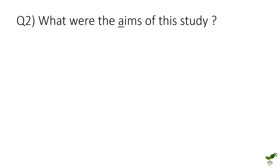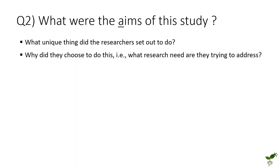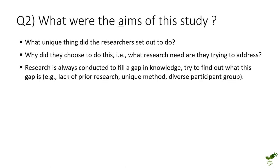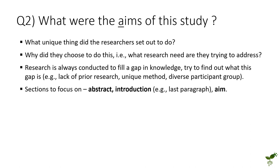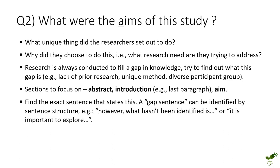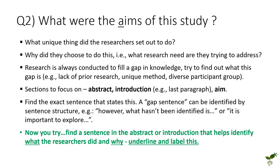The next step is A for Aims. Here we're looking for what unique thing the researchers did, as well as why they chose to do it — in other words, what research needs they are trying to address. Research is always done to fill a gap in knowledge, and we're trying to identify that gap. Focus on the abstract and primarily the latter half of the introduction. Also look for a gap sentence — normally a sentence or two that flags why the research was done, often structured like 'however, what hasn't been identified...' This gives you the key why of why the research was done.